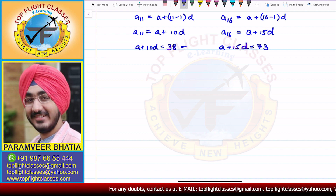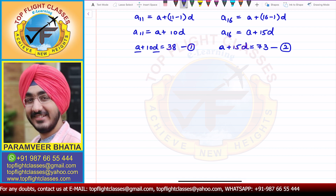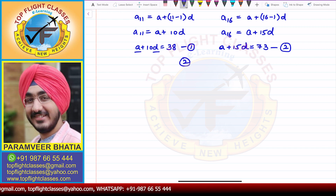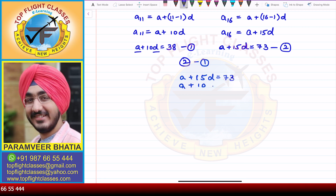Now we have two equations — a pair of linear equations in two variables, where the first variable is A and the second is D. Clearly, if we subtract the two equations, we can eliminate A. So doing equation 2 minus equation 1: A plus 15D equals 73, minus A plus 10D equals 38.